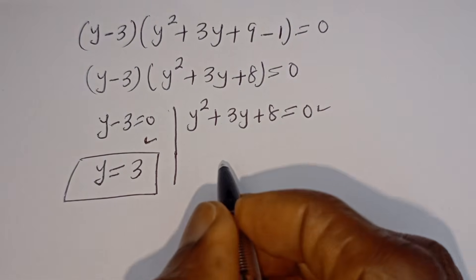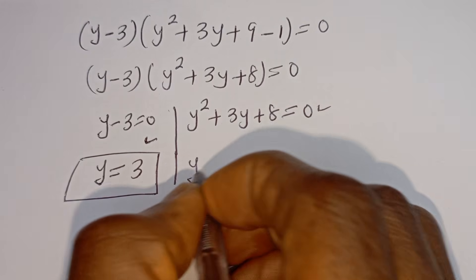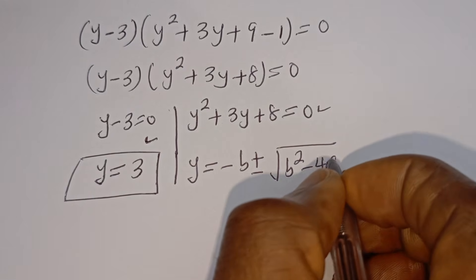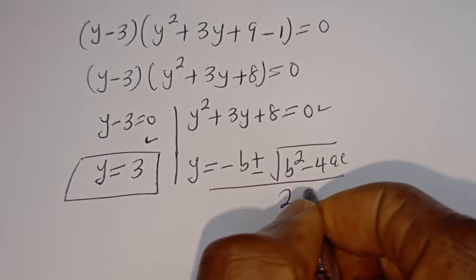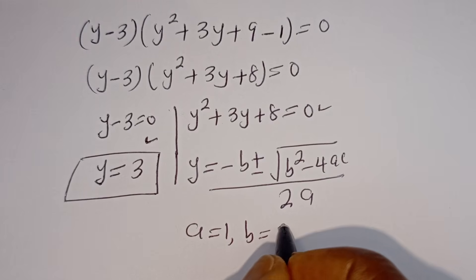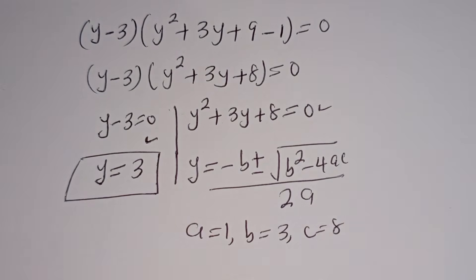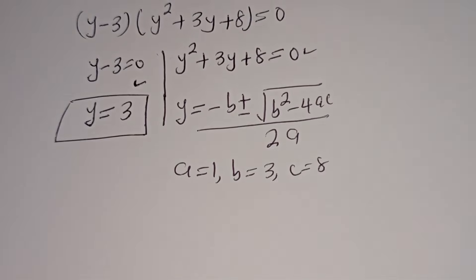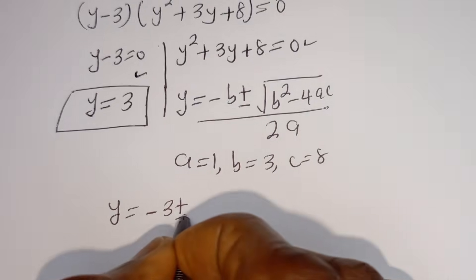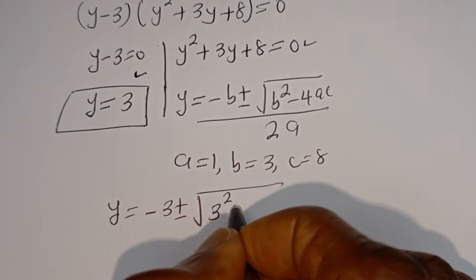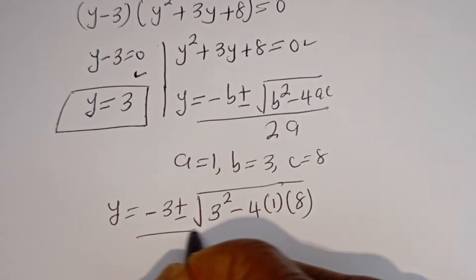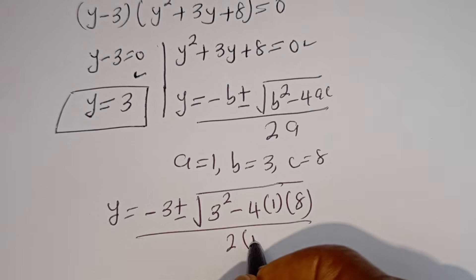And from the second case, this is a quadratic equation. Let's solve this using the quadratic general formula: y is equal to minus b plus or minus square root of b squared minus 4ac, over 2a. From this equation, a is equal to 1, b is equal to 3, c is equal to 8. Then, y is equal to minus 3 plus or minus square root of 3 squared minus 4 multiplied by 1 multiplied by 8, over 2 multiplied by 1.